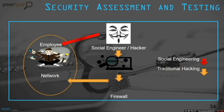Before going into testing, it's important to understand different techniques for accessing a system without authorization. Traditional hacking uses technical knowledge to penetrate systems through the network. Social engineering gathers information from or manipulates employees to gain access to systems — rather than targeting the systems directly. Understanding this difference is important before proceeding with any testing or security reviews.